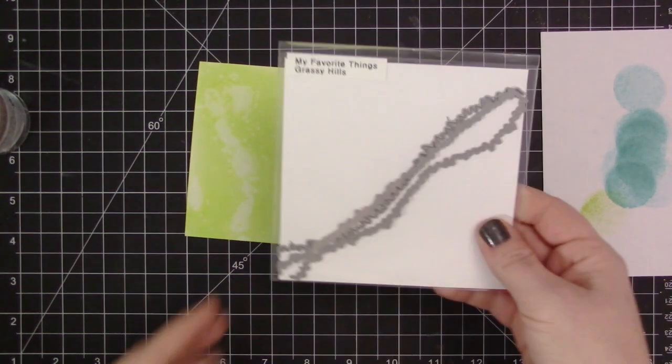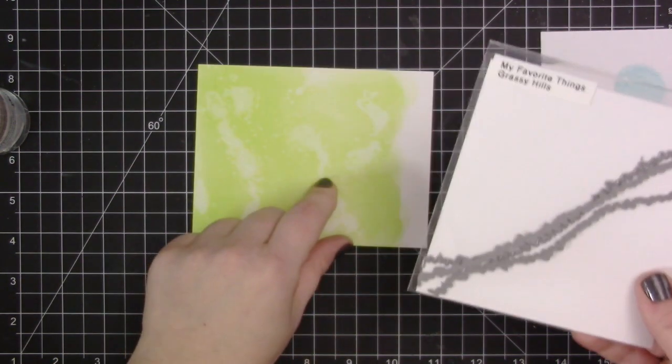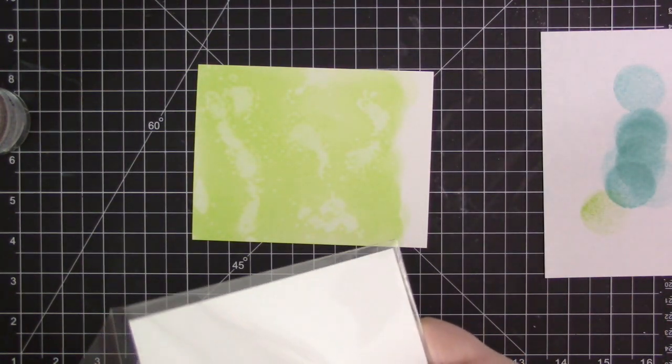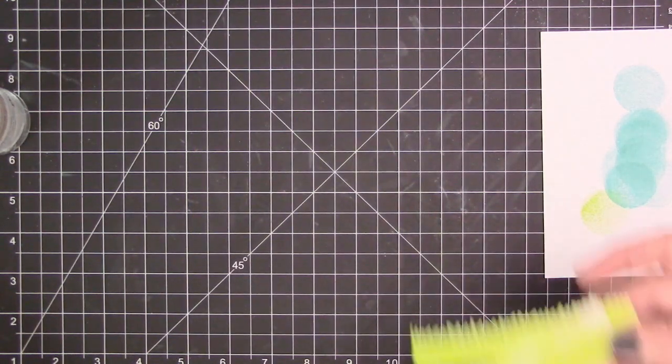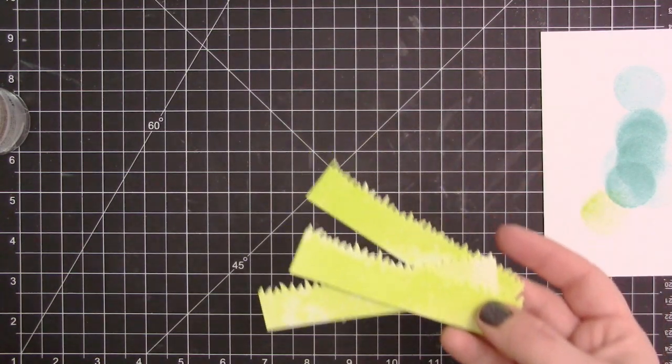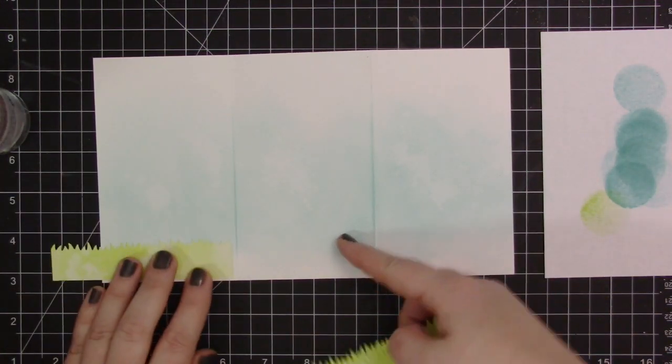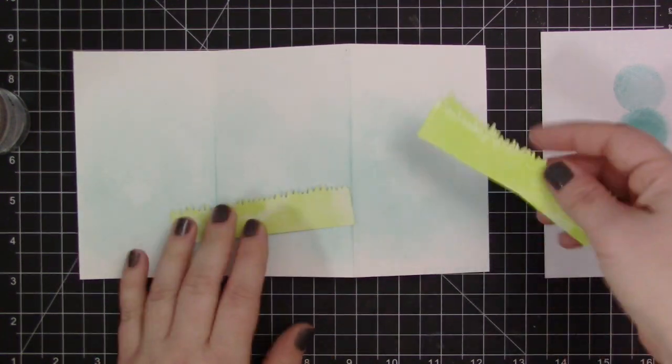Once I have that done and the little panel is dry, I'm going to use the grassy hills dynamics dies and cut three separate pieces for grass. I made sure that when I cut them out and die cut them, I kept them all roughly the same width so that when I put them onto the card base they'll all line up and look like one continuous row of grass when the card is fully opened. You can see there I'm laying them on top, they're going to fit perfectly.